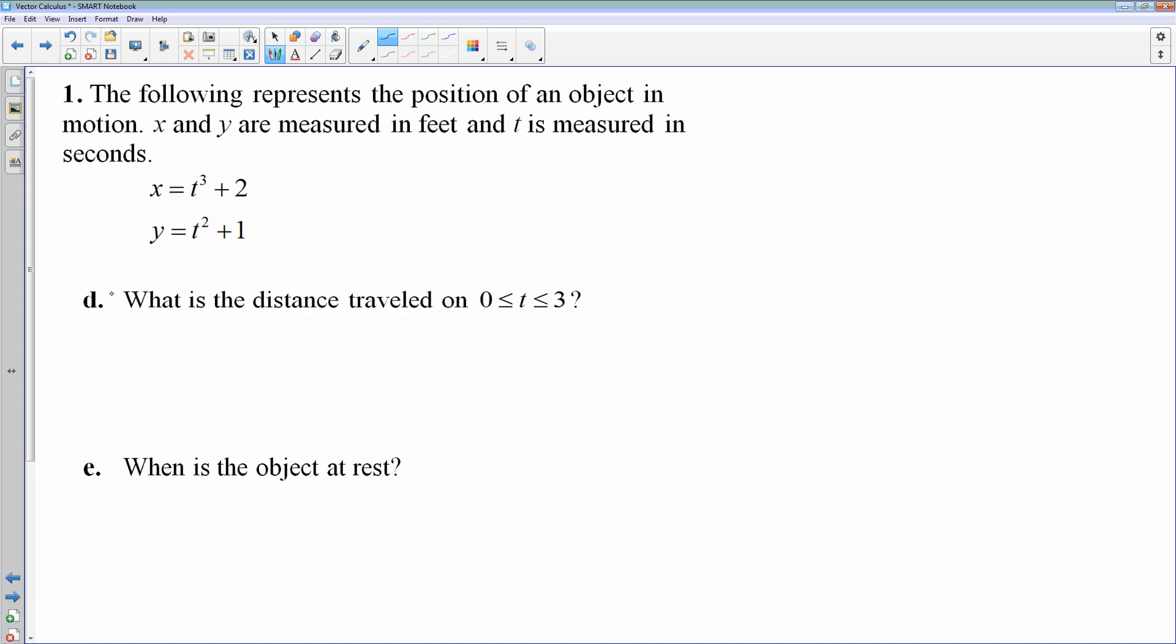Same problem, but moving on to a couple of different questions. What is the distance traveled on 0 to 3? Now, this is where it starts to get a little bit hairier, but distance traveled when you're dealing with parametrics or vectors is arc length. So my distance is going to be the area from 0 to 3, and then we'll use arc length.